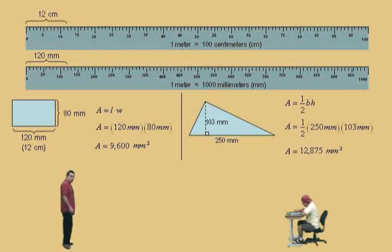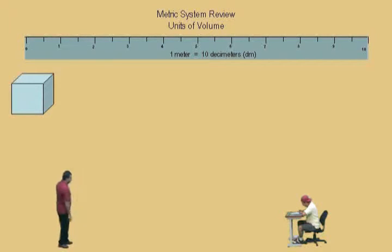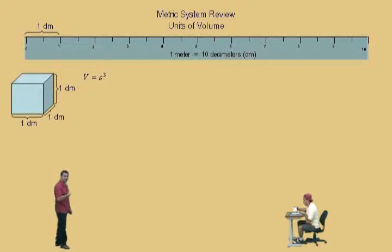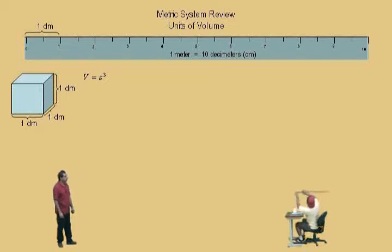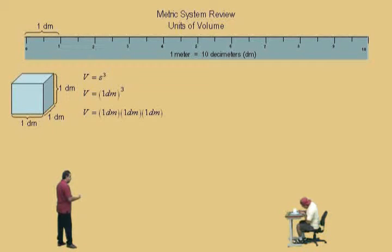Now let's do some volume problems — don't get scared. One meter is ten decimeters, don't forget. Here's a cube up here, Charlie. This cube is one decimeter as its length, its width is also one decimeter, and its height is one decimeter — it's a cube. Length times width times height, they're all the same. So the volume of a cube we actually say is side length cubed. There's one decimeter — how big is the decimeter, Charlie? Not very big. Volume is side length cubed for a cube, and one decimeter cubed equals one decimeter times one decimeter times one decimeter, which is one decimeter cubed.